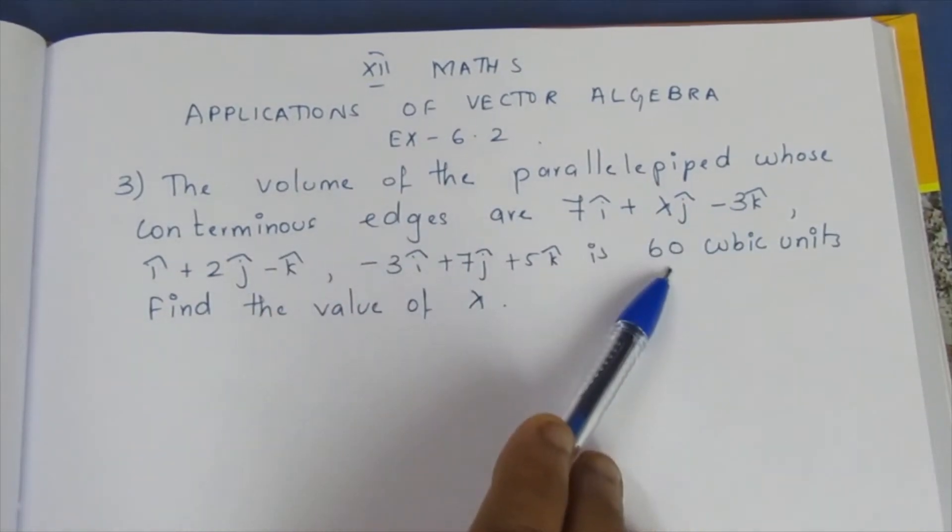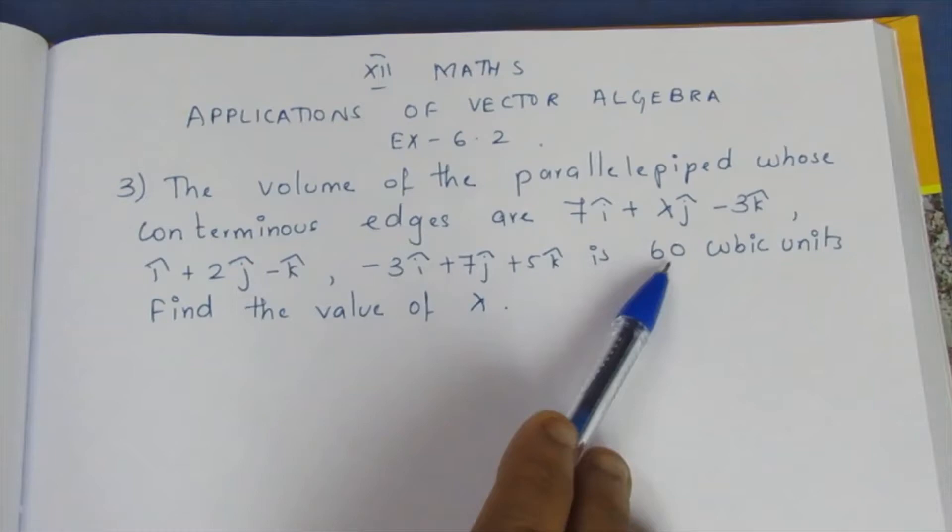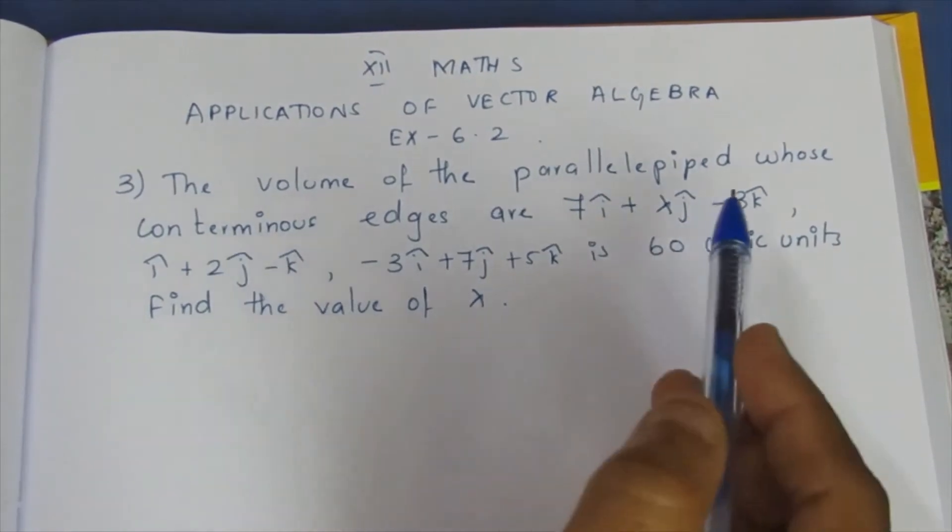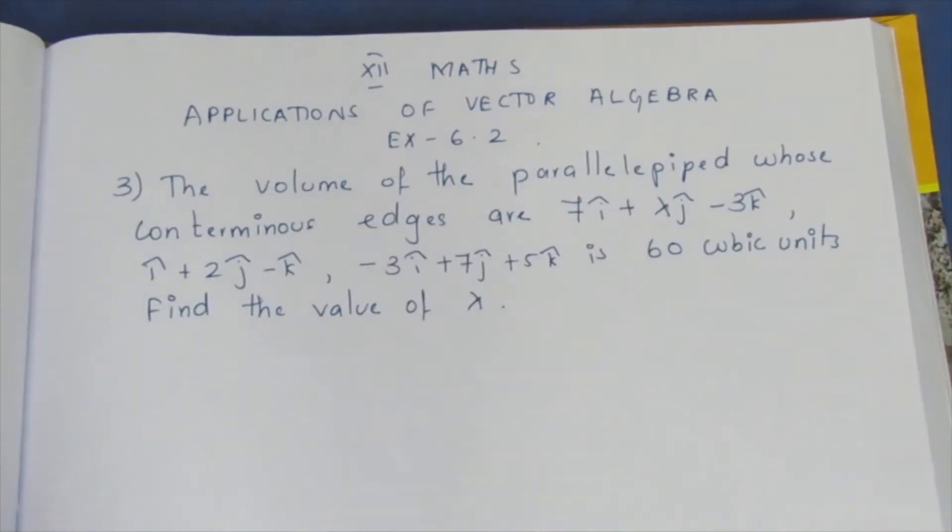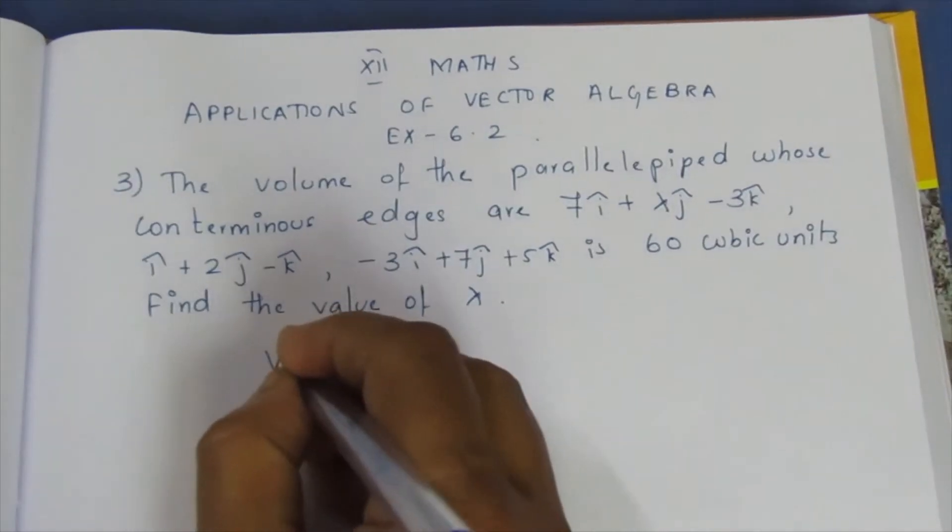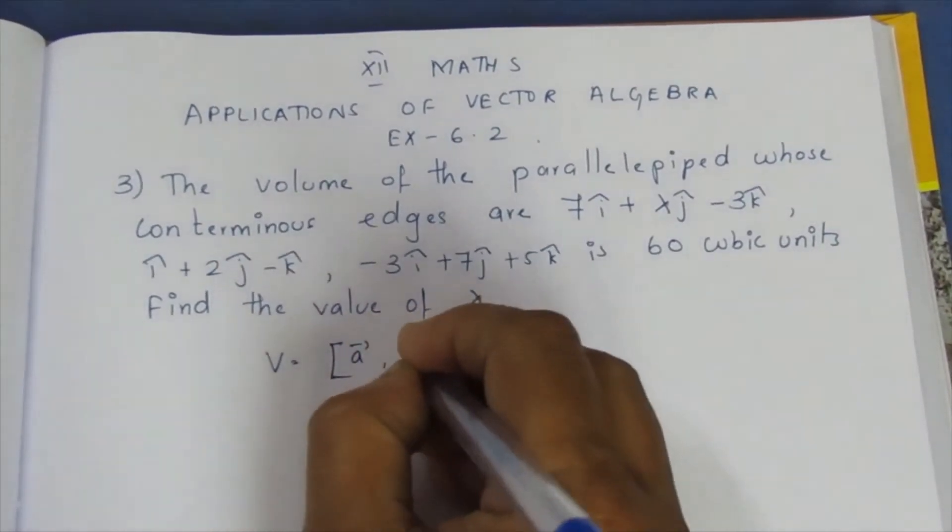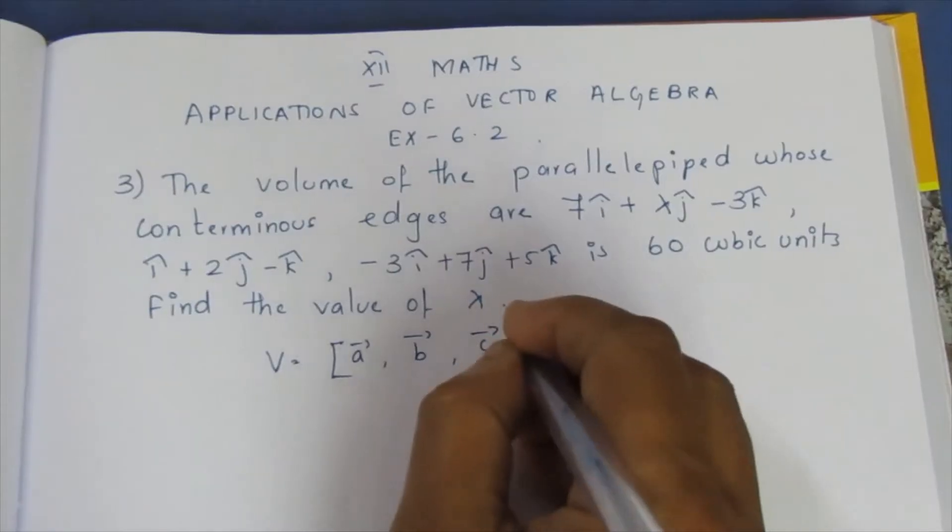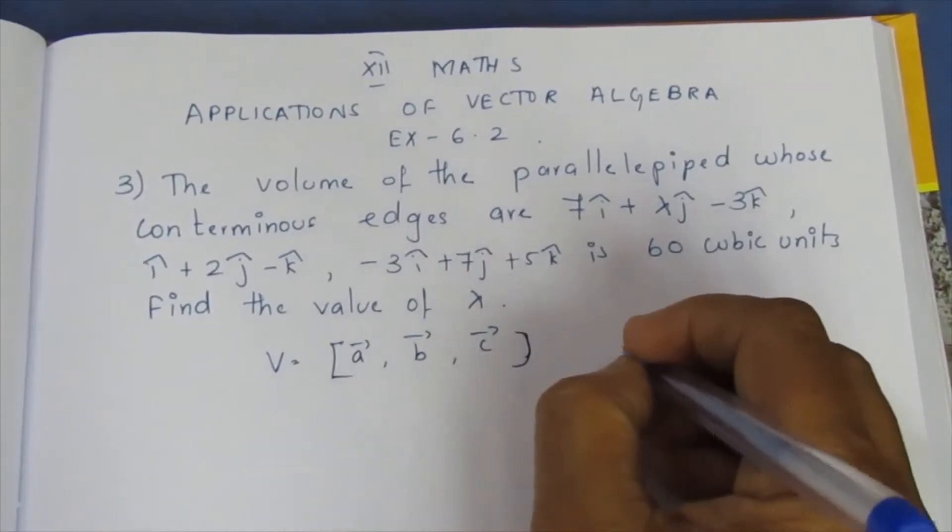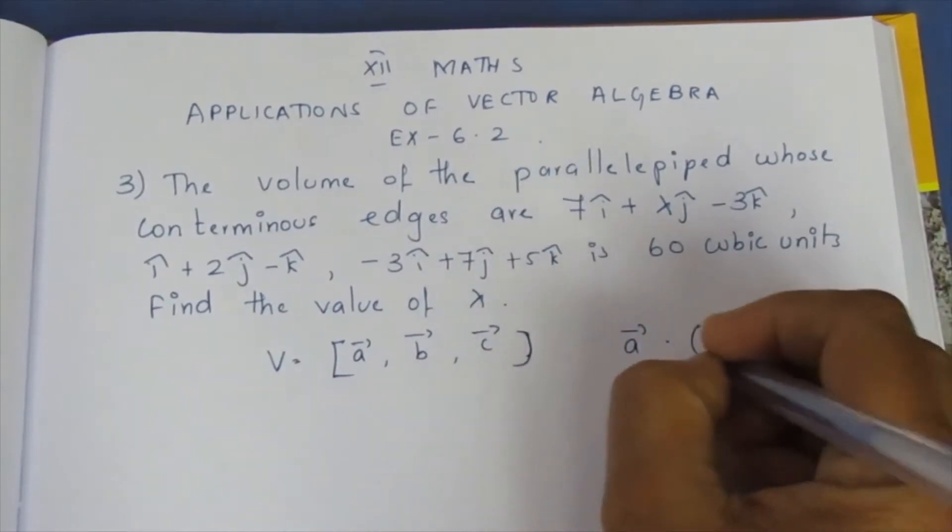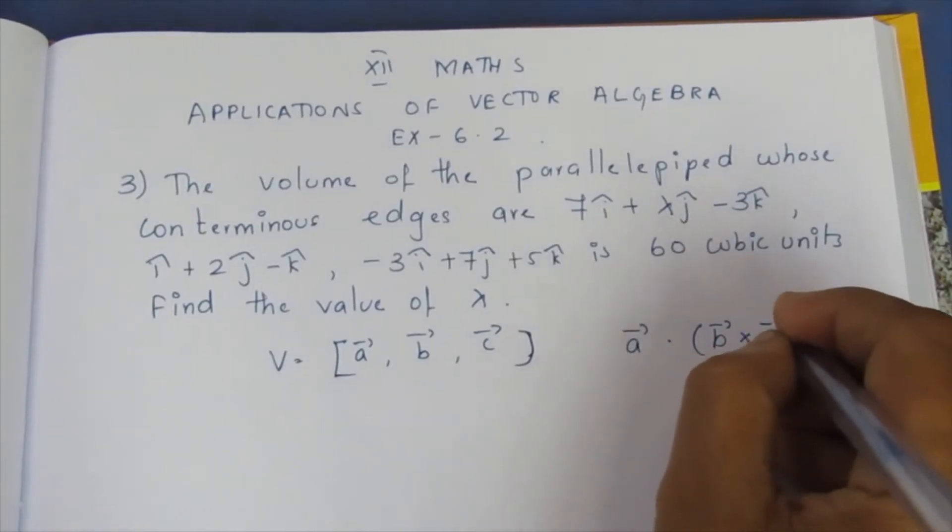So parallelepiped volume is 60 cubic units. In this, lambda we will find. The volume of the parallelepiped is a scalar triple product of A vector, B vector, C vector. A vector, B vector, C vector formula.